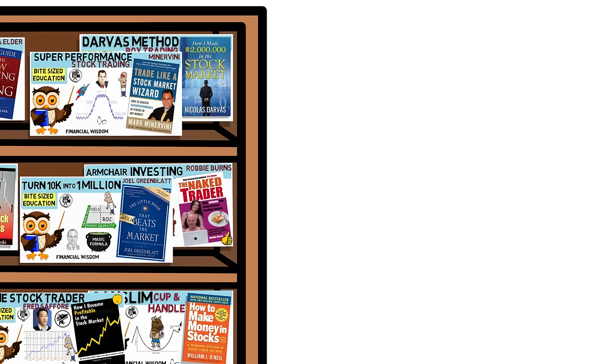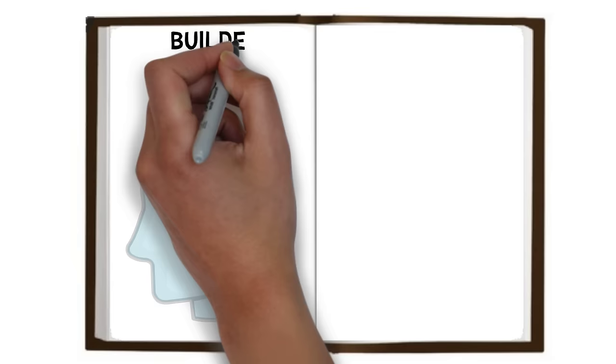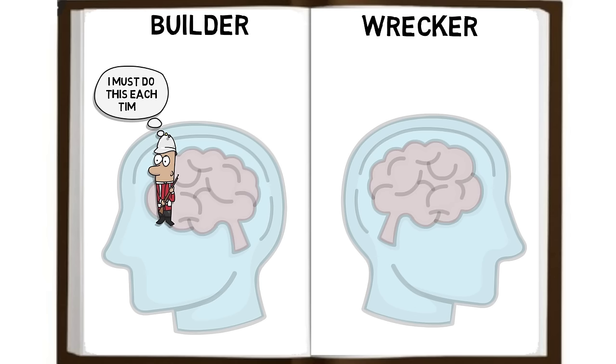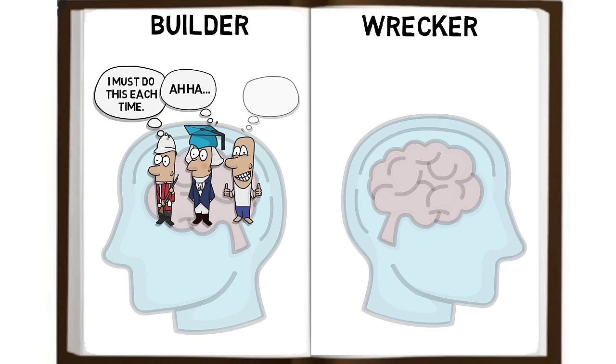Mark says there are two types of trader within all of us: a builder and a wrecker. The builder has a disciplined, methodical approach and trusts that results will come with consistency, always learning from mistakes and takes encouragement from new information. Forever optimistic, knowing that through discipline and a continually evolving process, good things will come.